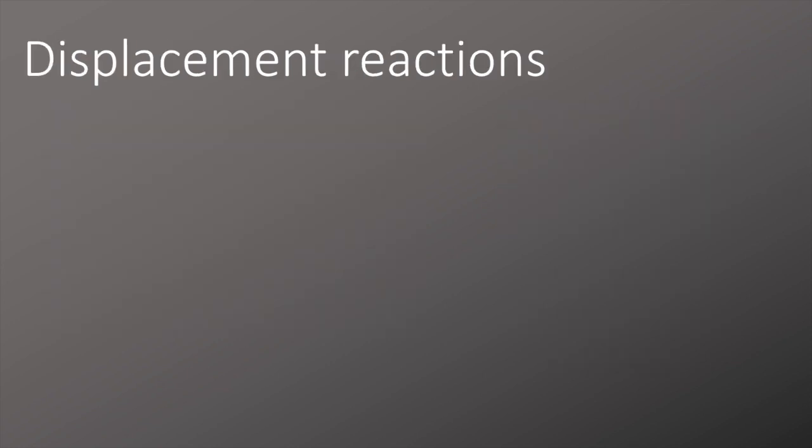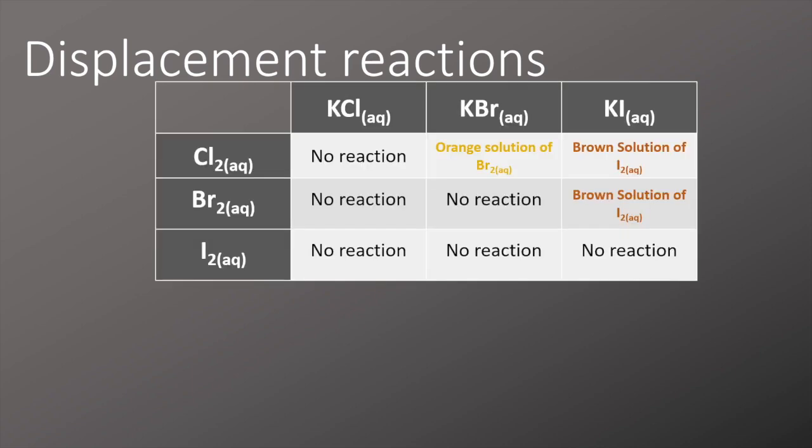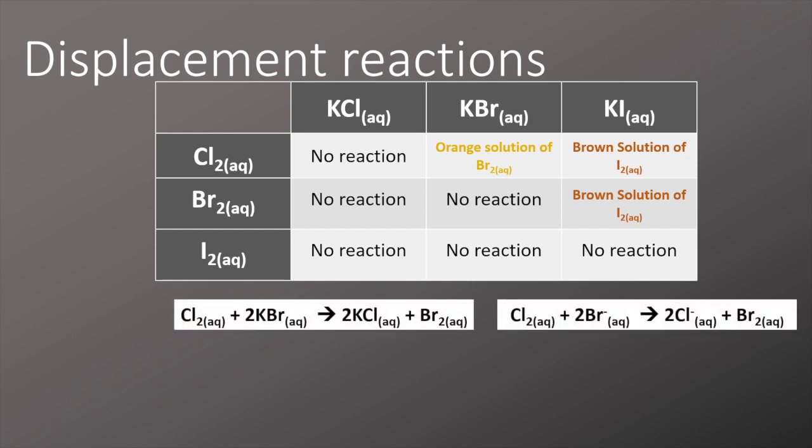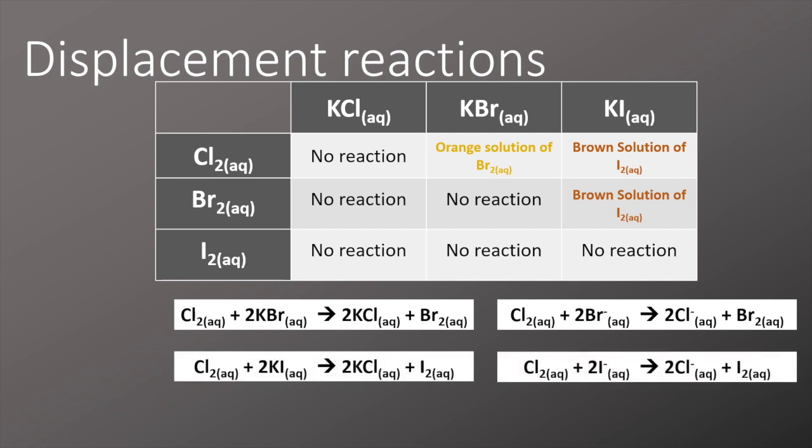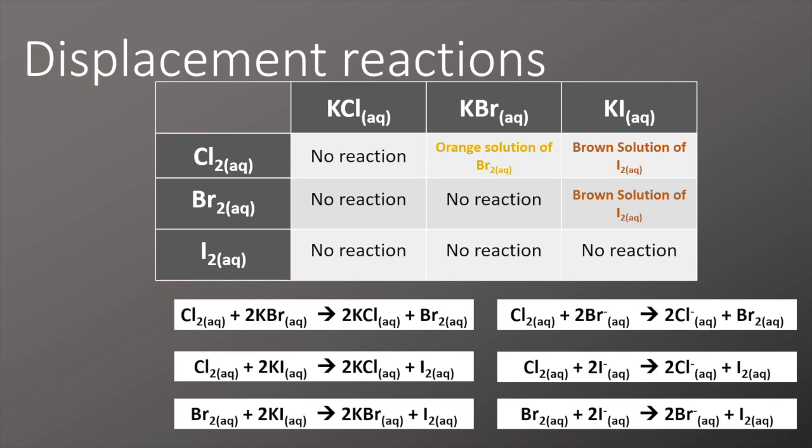We know from GCSE that the more reactive element will displace the less reactive element in a compound. It's possible to identify some of the halogens by observing their displacement reactions. You need to be able to recall these observations. We also need to remember the equations for those reactions taking place. So here we have chlorine reacting with KBr and its ionic equation, chlorine reacting with KI and that ionic equation, and bromine reacting with KI and its ionic equation. These equations are simple to learn following a simple pattern, and it's worth spending a bit of time making sure you've got them memorised.